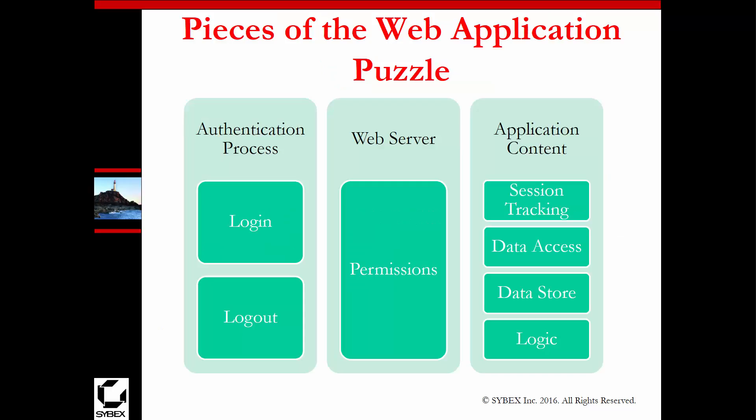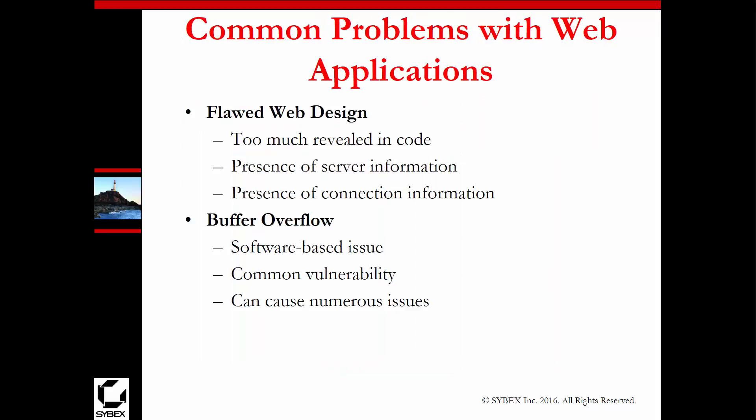Within the web application we could have different types of items: an authentication process — that would be login and logout — and accessing the web server, which involves permissions and specific application controls. Other common problems with web applications include flawed web design, being able to copy a website, or causing a buffer overload due to a software issue and thus gaining additional information you weren't supposed to.